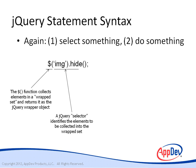Most jQuery statements start by calling the dollar sign function and passing it a string. This string is called a jQuery selector and identifies what's to be selected. When called this way, the jQuery function finds all of the elements in the DOM that match the selector and returns them as a special collection known as the jQuery wrapped set. In this case, the wrapped set returned is the set of all image elements in the document.